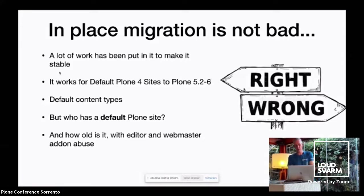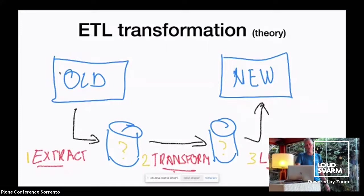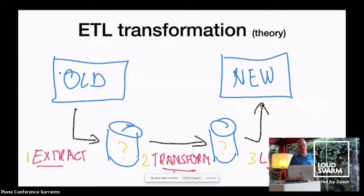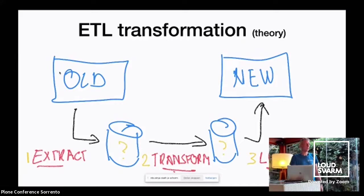Our migration pope Pete Bauer was right, because he created this. So what do we have? We have an ETL transformation. You extract something from the old site, you store it, you transform it into something more suitable, and then you load it up into your new environment. This is the same thing as Transmogrifier has been doing for years. Transmogrifier is also a nice tool, but Collective Export Import is much cleaner and simpler in its concept.